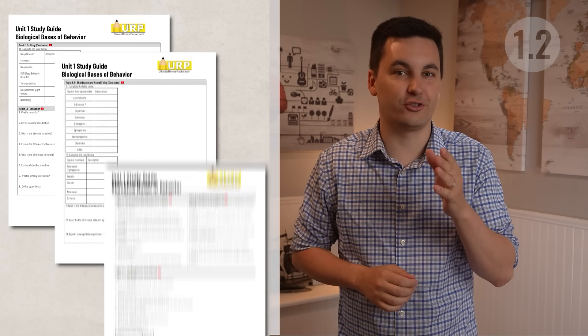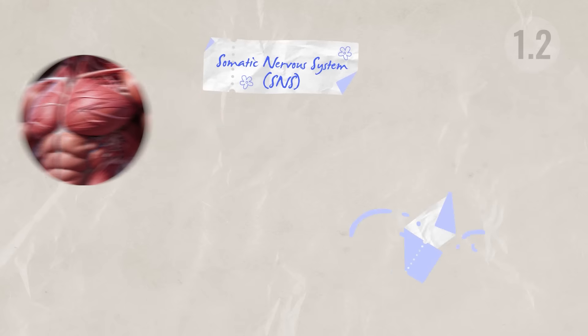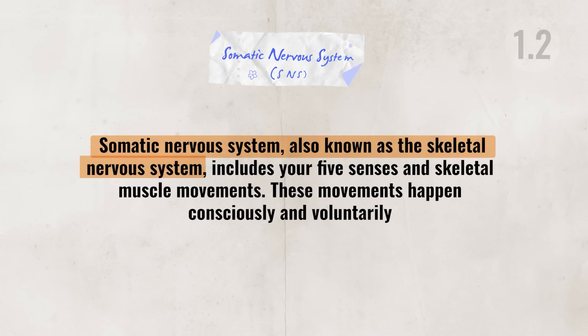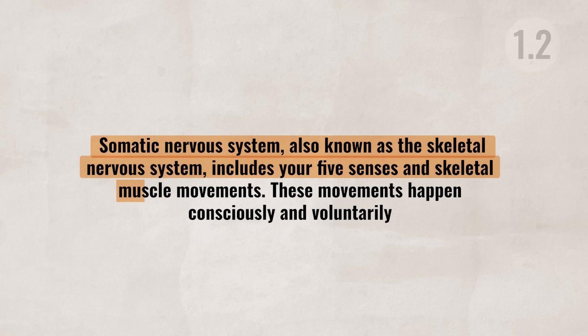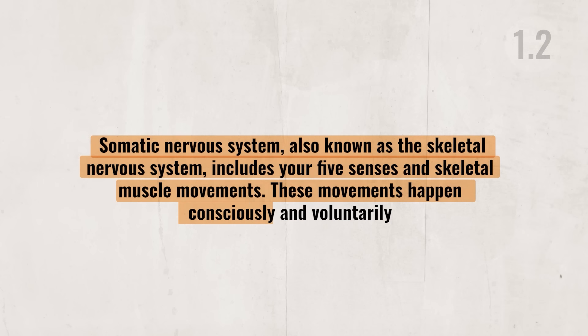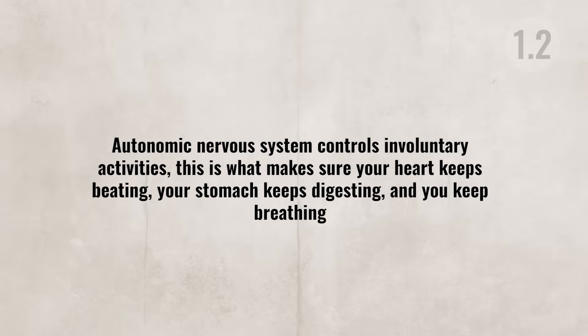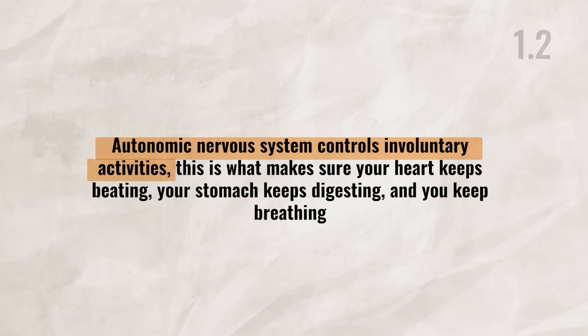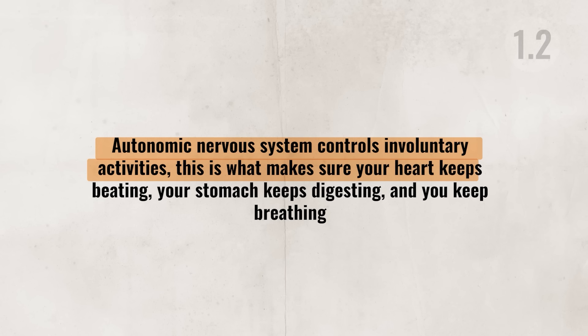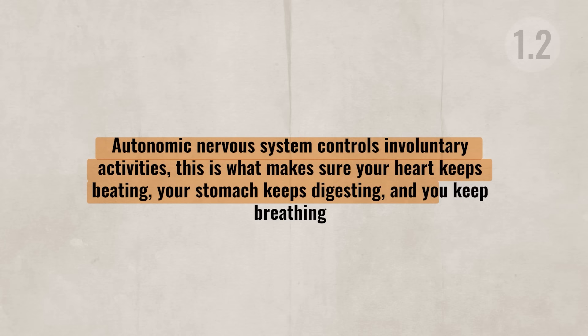Now we'll break down the different parts of the peripheral nervous system. The somatic nervous system, also known as the skeletal nervous system, includes your five senses and skeletal muscle movements — these happen consciously and voluntarily. The autonomic nervous system controls involuntary activities. This is what makes sure your heart keeps beating, your stomach keeps digesting, and you keep on breathing — the important things that stop you from dying.